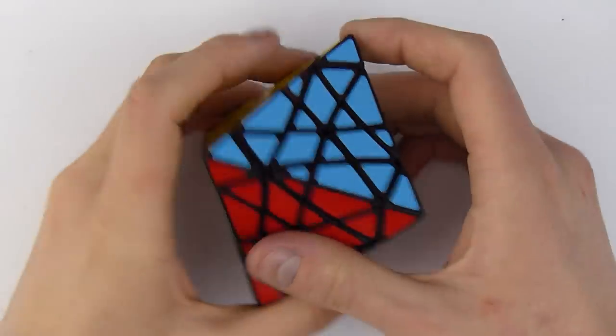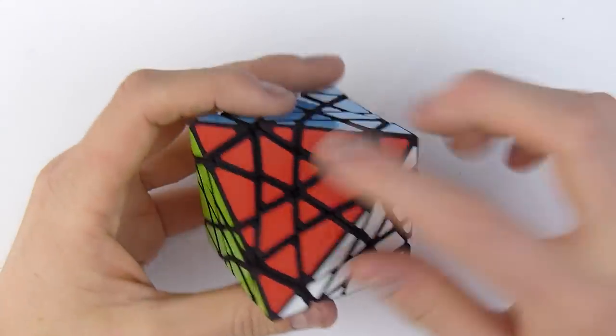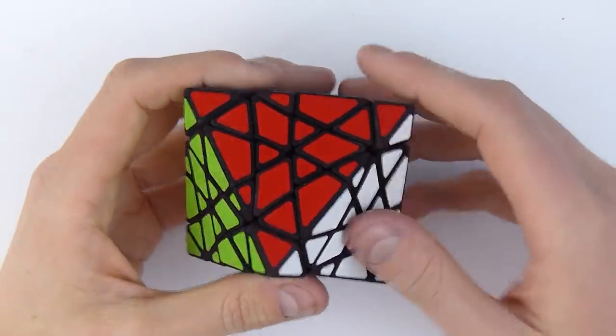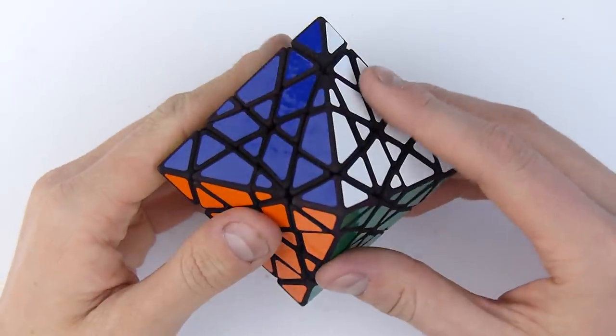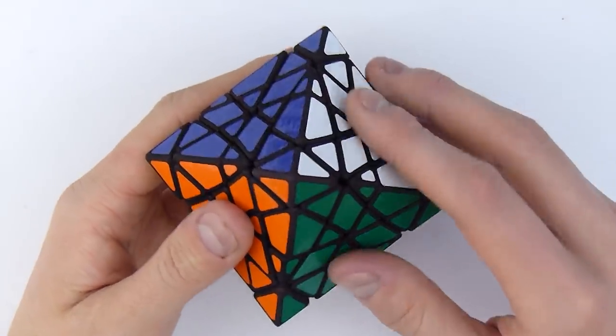For those who don't remember, this is the Octahedron Star Minx, and so this is what I traded for two custom puzzles made by Tom Driessens. I hope I'm pronouncing this correctly.